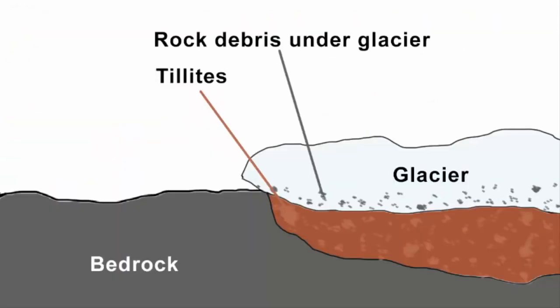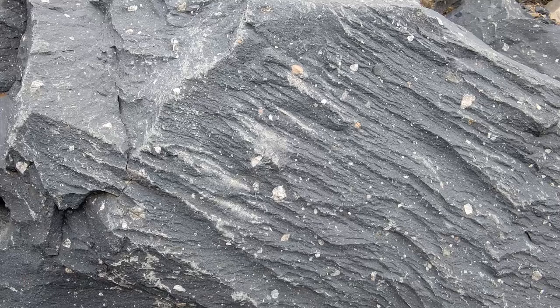The third evidence is Tillite. Tillite is the sedimentary rock formed out of deposits of glaciers. Mostly you will find them in colder regions.